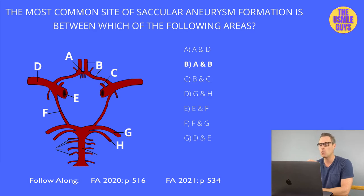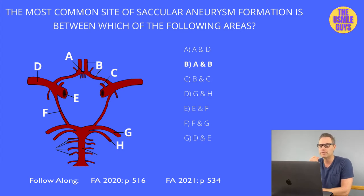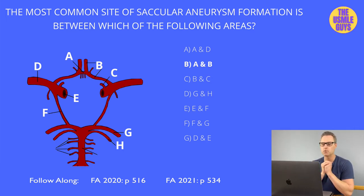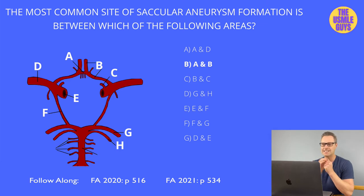If we compress the anterior communicating artery, we'll get bitemporal hemianopia, due to compression of the optic chiasm. If a rupture leads to ACA distribution ischemia, watch for contralateral lower extremity hemiparesis and sensory deficits. Rupture of the middle cerebral artery, identified by letter D, causes contralateral upper extremity and lower facial hemiparesis as well as sensory deficits.